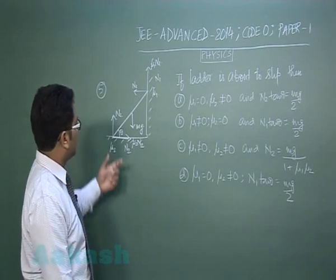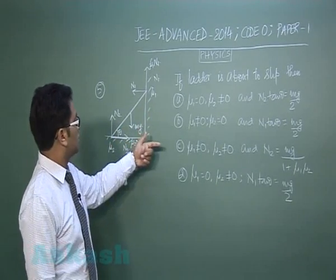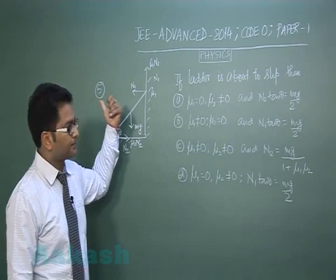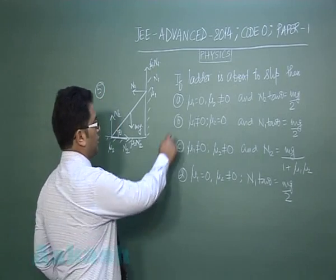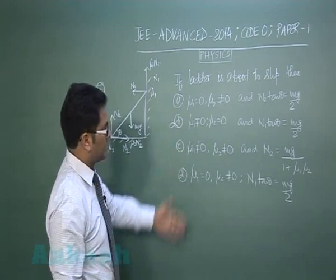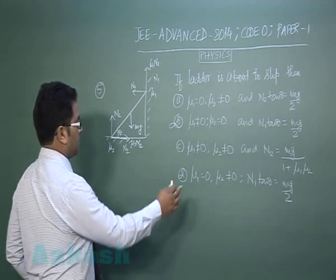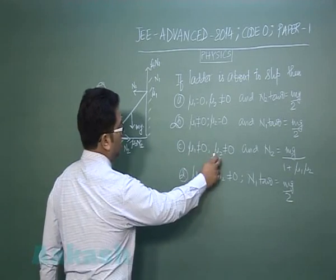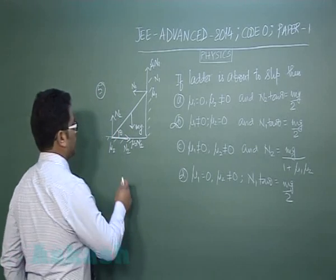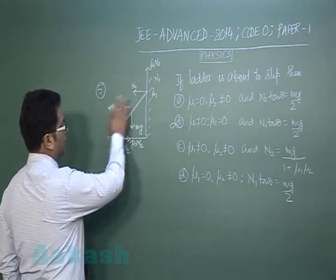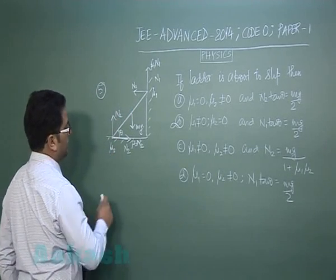Because you could see there is no force to balance n1, so B is already eliminated. Now we got to see with this option. First, let me solve when both places friction exists.